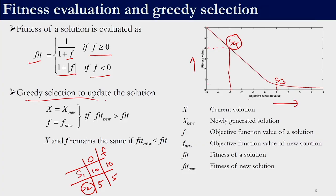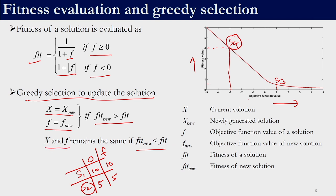The greedy selection criterion is: if the fitness of the new solution is greater than the fitness of the current solution, then replace (x = x_new, f = f_new). If the fitness of the new solution is less than the fitness of the old solution, we retain the old solution values for the decision variable and objective function. This is a major difference between ABC and many other algorithms studied.